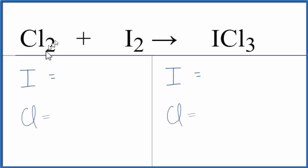In this video, we'll balance the equation Cl2 plus I2 equals ICl3. That's chlorine gas plus iodine gas. That gives us iodine trichloride.